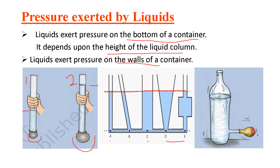Now let us discuss the second point: liquid exerts pressure on the walls of the container. In this figure we can see that a balloon has been fixed on the side wall of a plastic bottle and it is bulging outward. If it is bulging, it means the water is applying pressure on the balloon fixed at the side. This shows that liquid also exerts pressure on the walls of the container — it can exert pressure on the bottom as well as on the side walls.